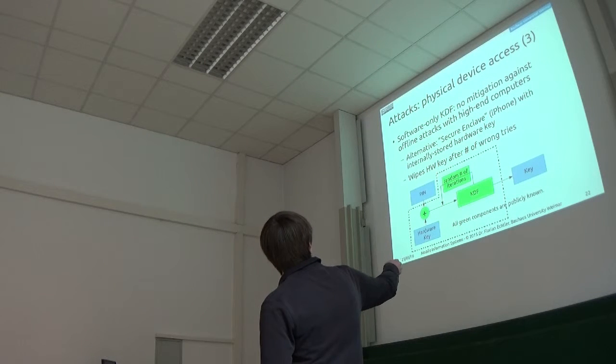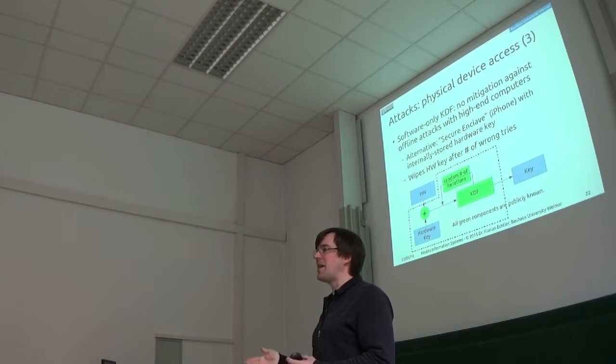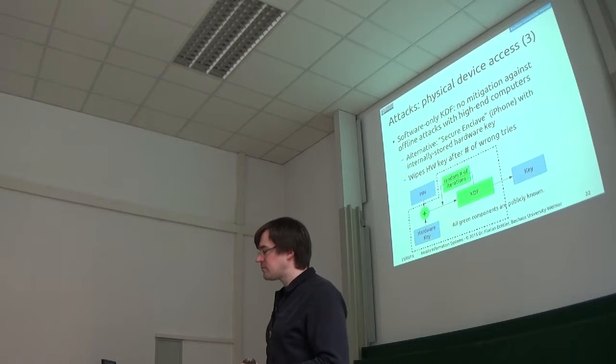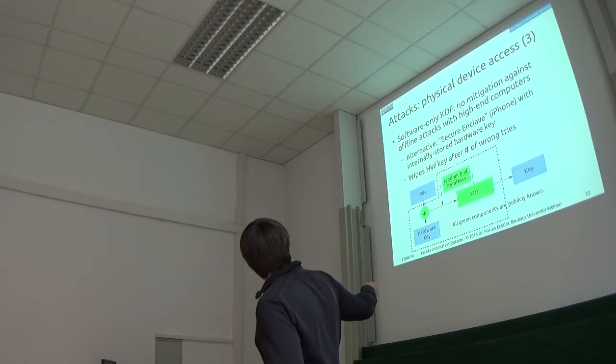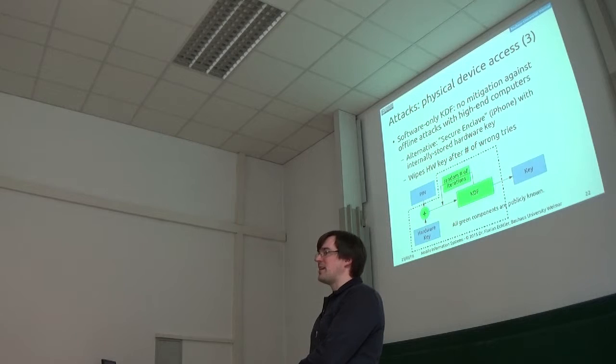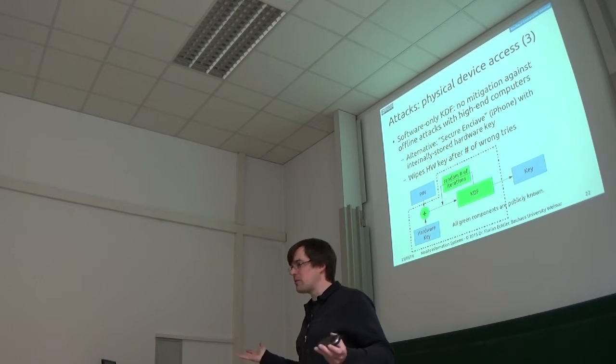What this so-called secure enclave does is also if you put in too many wrong attempts, then it will delete the key, and then of course the data is also lost forever. And if I remember correctly, the iPhone that was being discussed in that terrorism case actually was an older model which did not yet have this in hardware. And so for that reason, they were able to still unlock it by bypassing this erase function, so that the iPhone would erase itself after 10 wrong PIN numbers. If you can bypass that, then of course you can try all the PIN numbers you want, and at some point you will hit the right one.